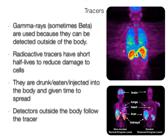Radioactivity is also used as a tracer to help look inside the body. Gamma rays and sometimes beta particles are used because they can be detected outside the body. Alpha radiation is too strongly ionising and not penetrating enough. Tracers get into the body through a drink, food, or injection into the blood, and are given time to spread to the relevant area. Detectors outside the body then follow the tracer and build up a picture so doctors can work out what's wrong.